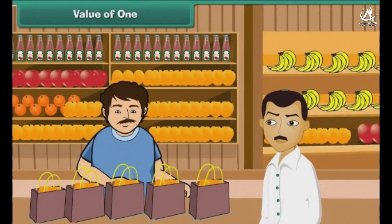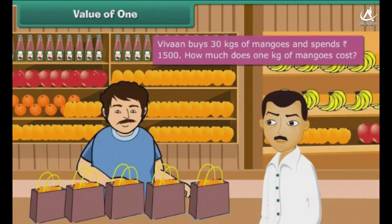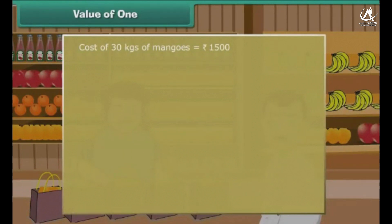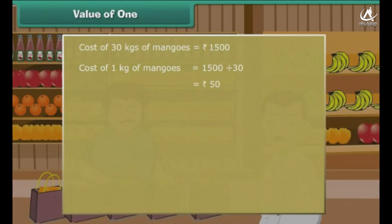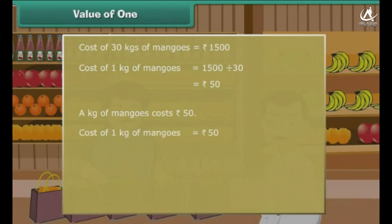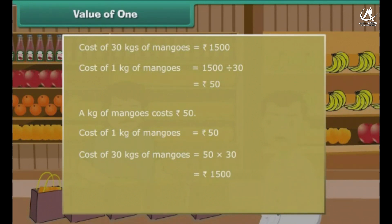Value of 1. Vivant buys 30 kgs of mangoes and spends 1,500 rupees. How much does 1 kg of mangoes cost? Cost of 30 kgs of mangoes is 1,500 rupees. Cost of 1 kg of mangoes is 1,500 divided by 30, that is 50 rupees. A kilogram of mangoes costs 50 rupees. Let us verify: cost of 1 kg is 50 rupees, so cost of 30 kgs is 50 into 30, which is 1,500 rupees — confirming our division is correct.